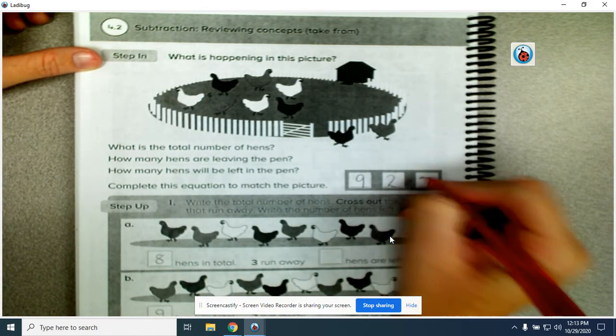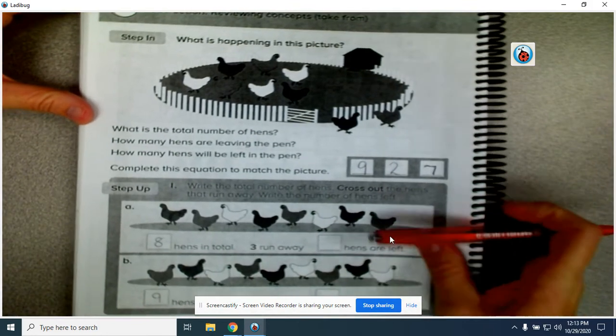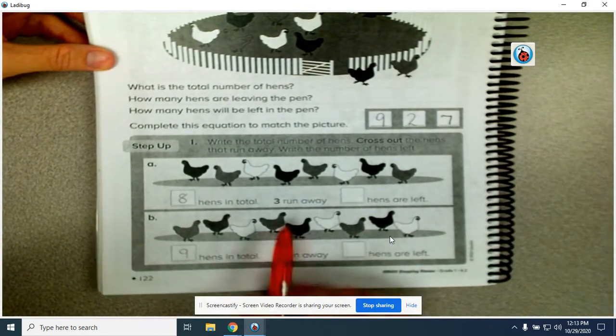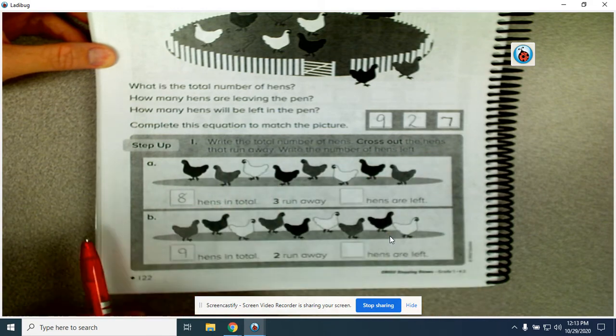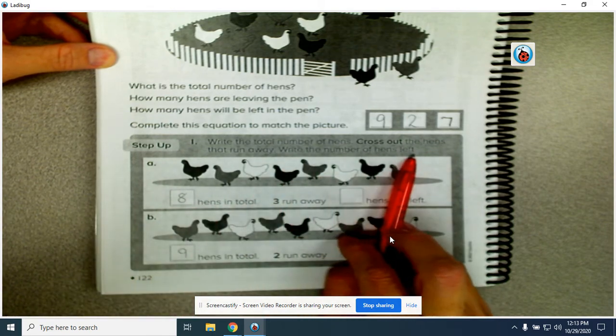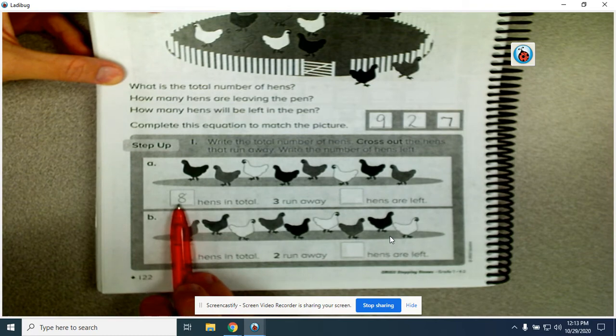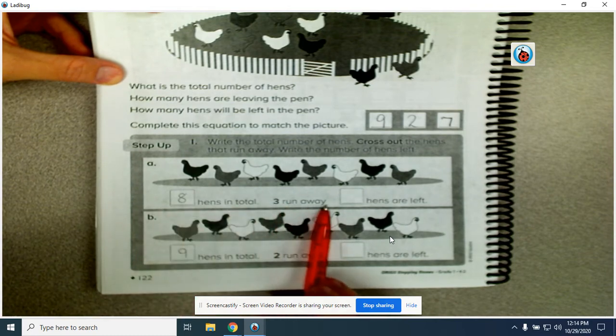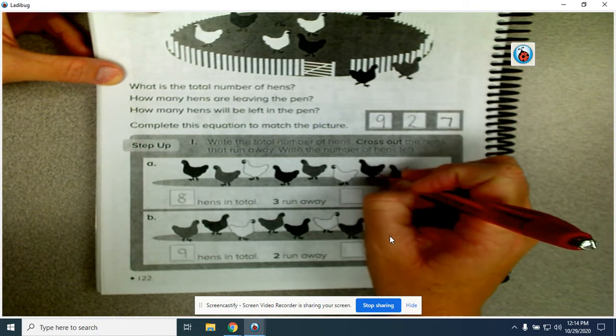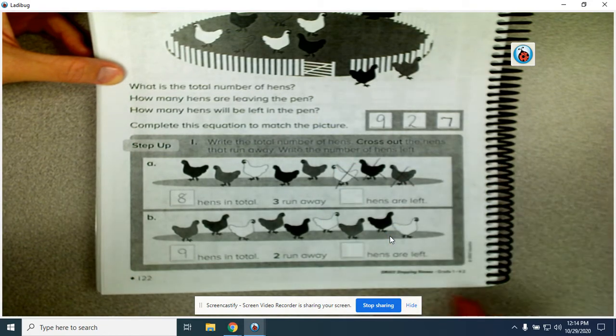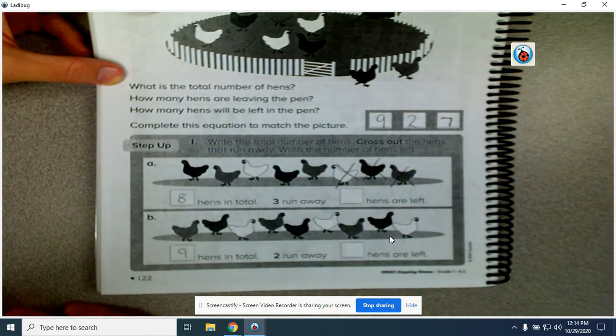Okay, on the next one, step up, it says write the total number of hens, cross out the hens that ran away, write the number of hens left. So it says there are eight hens in total, three ran away, so you're going to mark out one, two, three and put how many hens are left.